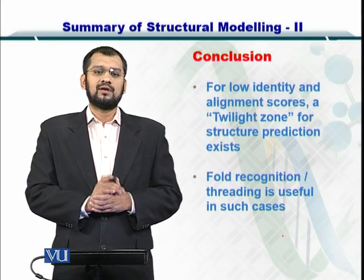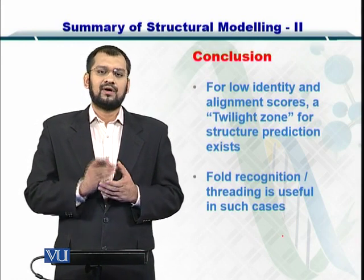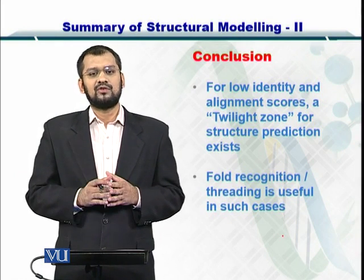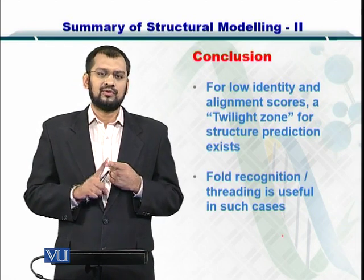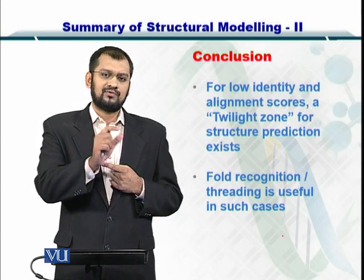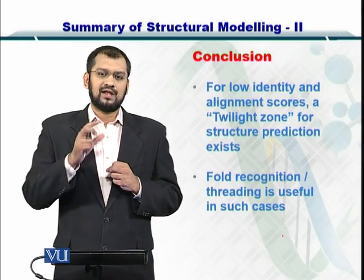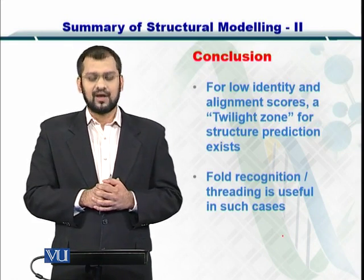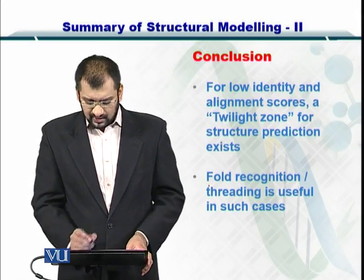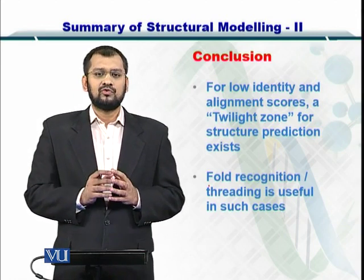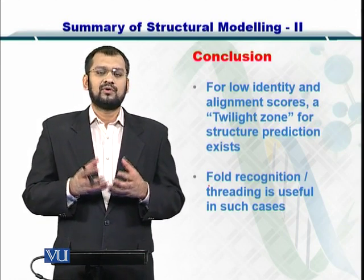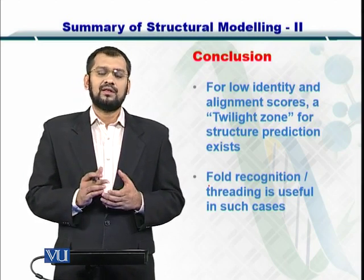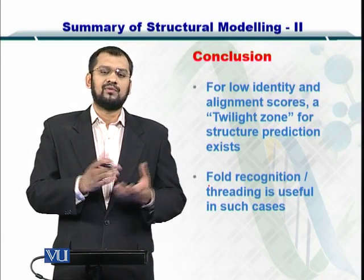In conclusion, for fold recognition you may have a low identity and a low sequence alignment score. In such cases threading is very useful. Threading relies on fold databases and you have to find different folds from the overall protein structure, then investigate each fold individually to form it from your sequence. The fold recognition paradigm is also extremely useful for novel protein structure identification — if your protein structure is not in the PDB, you can use threading to predict novel protein structures as well.